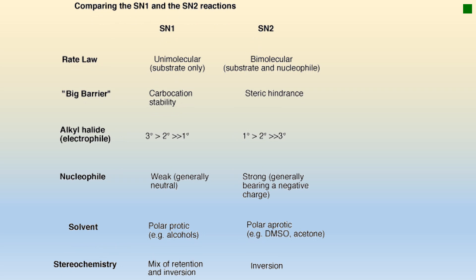Comparing SN1 and SN2 reactions, starting with the rate row: in SN1, only the substrate is involved in the rate-determining step; in SN2, both substrate and nucleophile are involved in the rate-determining step. Regarding the energy barrier: in SN1, the barrier is carbocation stability; in SN2, the barrier is steric hindrance.